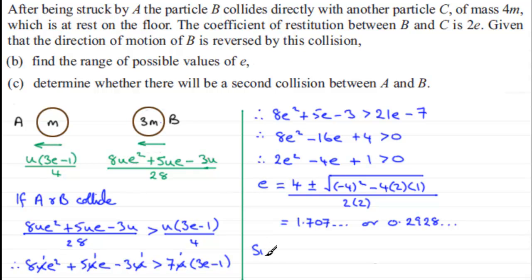We found that e, let's just put since, e had to be greater than 3 eighths, but less than or equal to a half. Now 3 eighths as a decimal is 0.375. And you can see that 0.2928 then is not in this interval. So it follows from this statement that a and b will not collide.